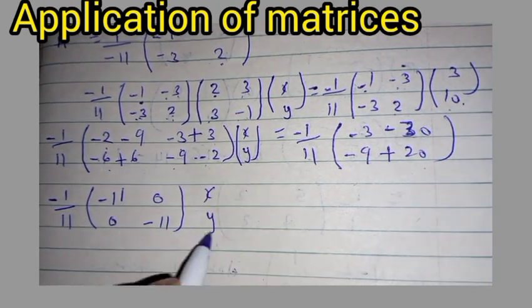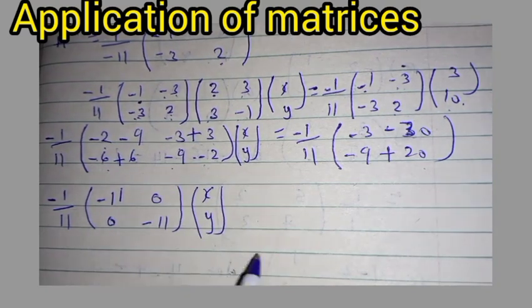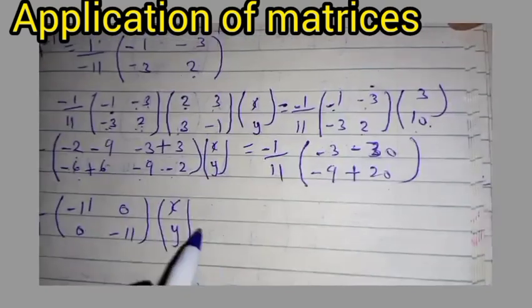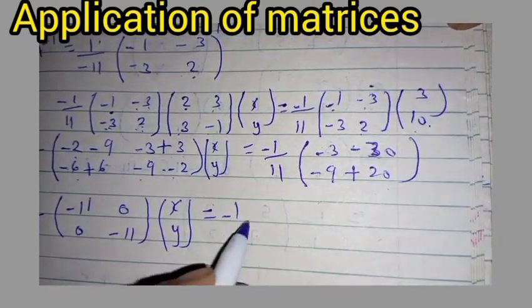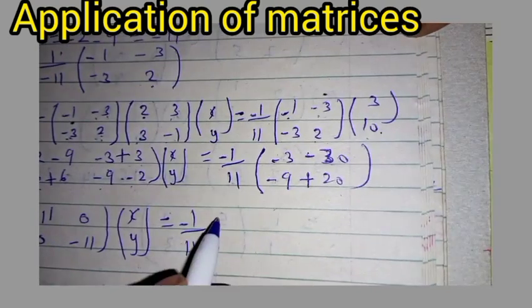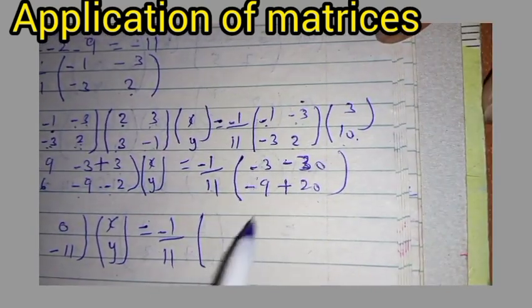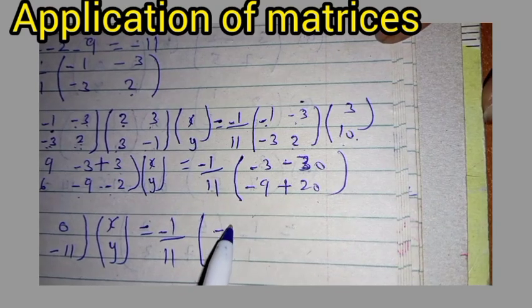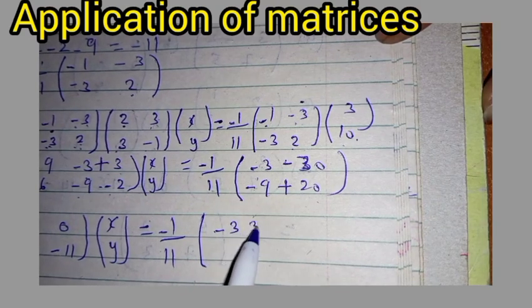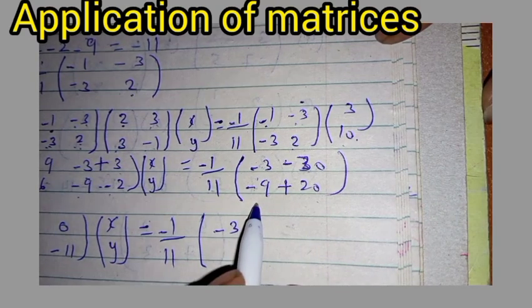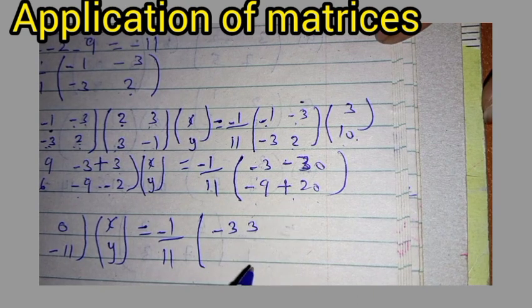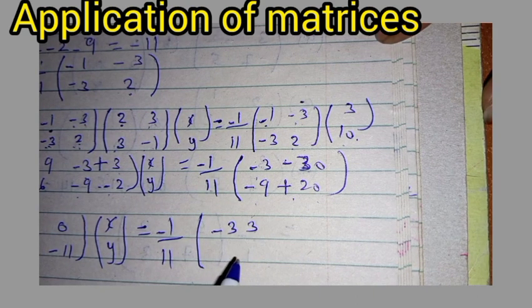On the right-hand side, we have negative 1 over 11 times [-1, -3; -3, 2] multiplied by [3, 10]. Computing: negative 1 times 3 gives negative 3, negative 3 times 10 gives negative 30. Then negative 3 times 3 gives negative 9, and 2 times 10 gives 20, giving the vector [-3, 11].